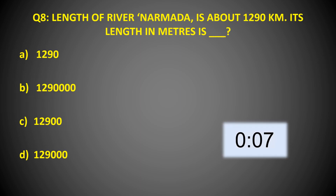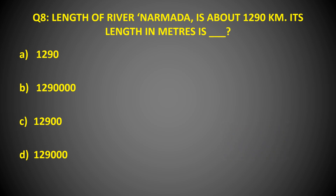The length of river Narmada is about 1,290 km. Its length in meters is? You have 20 seconds for this. You have to convert kilometers into meters. And the right answer is Option B.